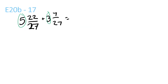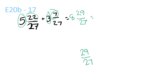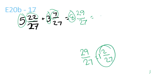5 plus 3 is 8. 22 plus 7 is 29 over 27. 27 goes into 29 once with a remainder of 2 over 27. So 1 and 2 over 27 plus 8 is equal to 9 and 2 over 27.